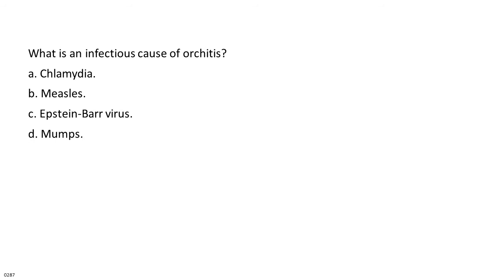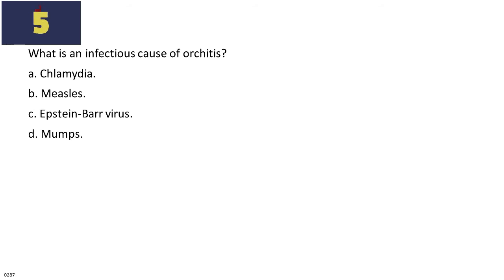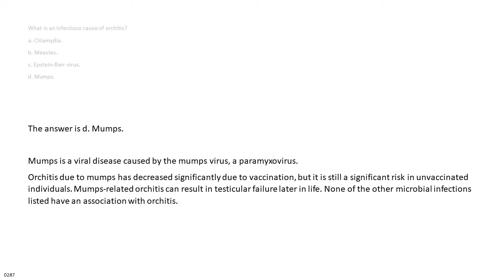What is an infectious cause of orchitis? A. Chlamydia. B. Measles. C. Epstein-Barr virus. D. Mumps. The answer is D. Mumps. Mumps is a viral disease caused by the mumps virus, a paramyxovirus. Orchitis due to mumps has decreased significantly due to vaccination, but it is still a significant risk in unvaccinated individuals. Mumps-related orchitis can result in testicular failure later in life. None of the other microbial infections listed have an association with orchitis.